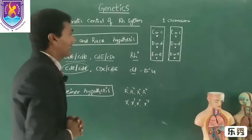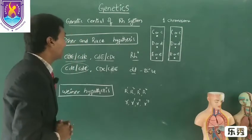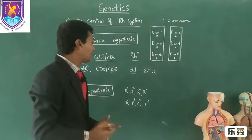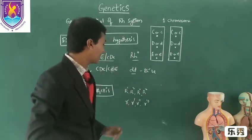This is regarding Fischer and Race hypothesis. And another hypothesis which explains the genetic control of the Rh system is Weiner hypothesis. Weiner explains that there are eight alleles which control the Rh system.